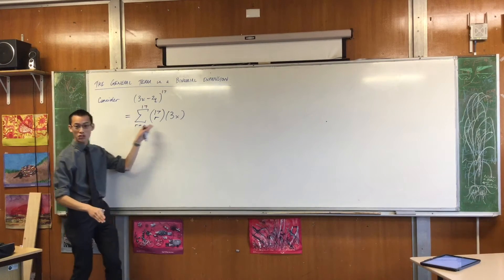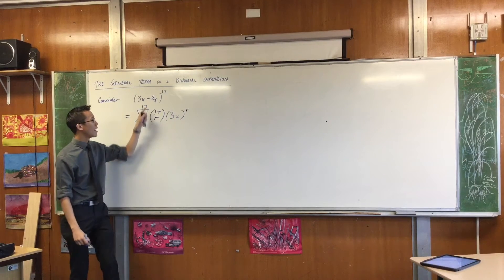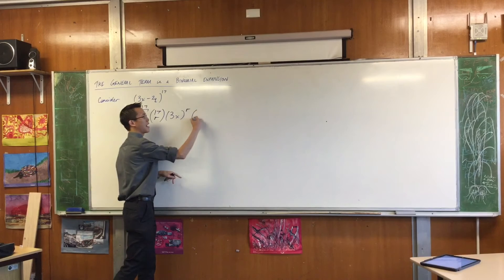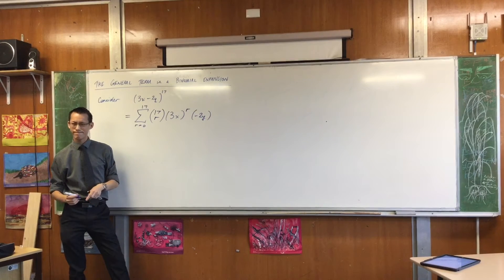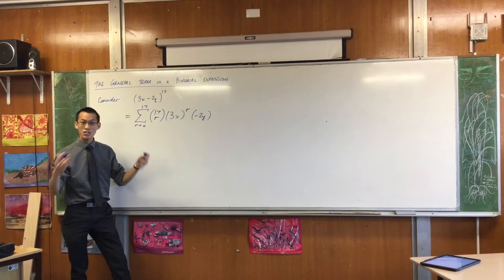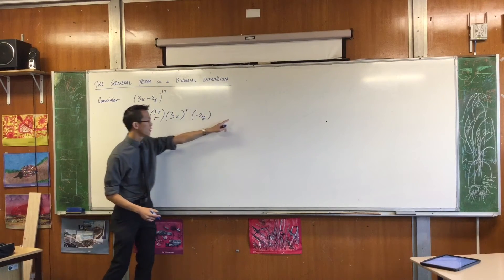So what I've done is I've renamed this because I remember we usually designate N to be the row, right? So R is which term along. So I can say I've got r of those, which means that I'll have negative 2y's. How many of those will I have?